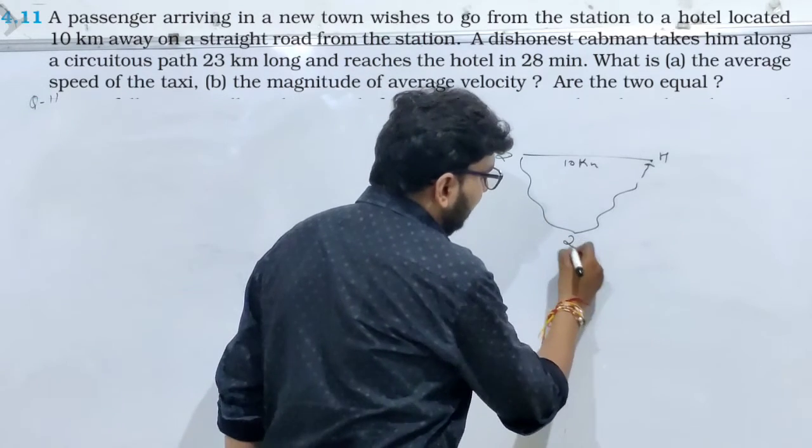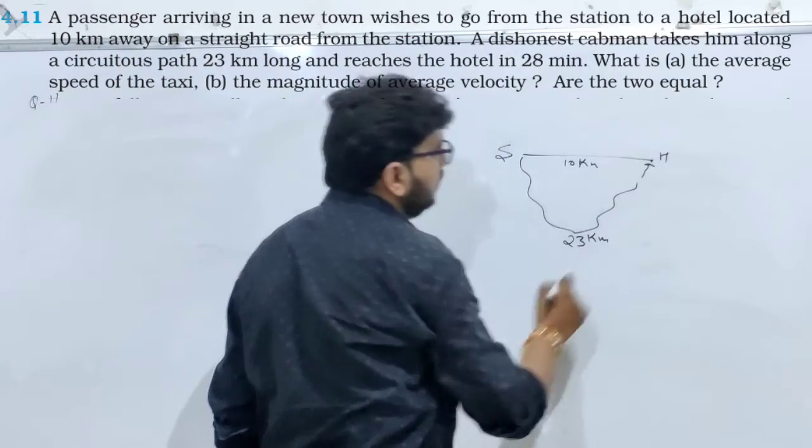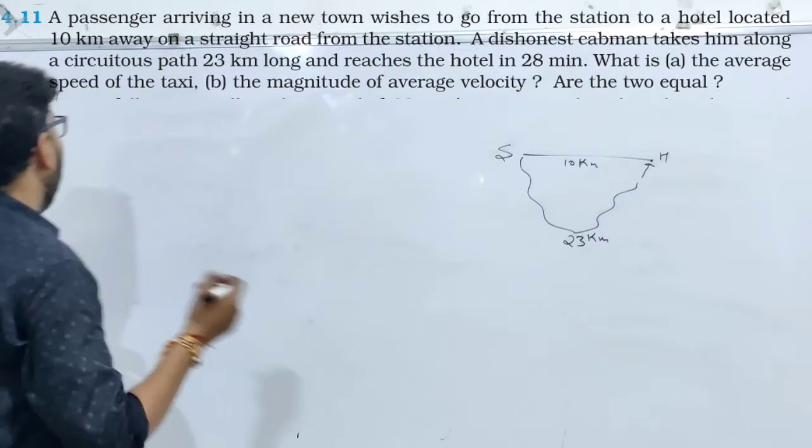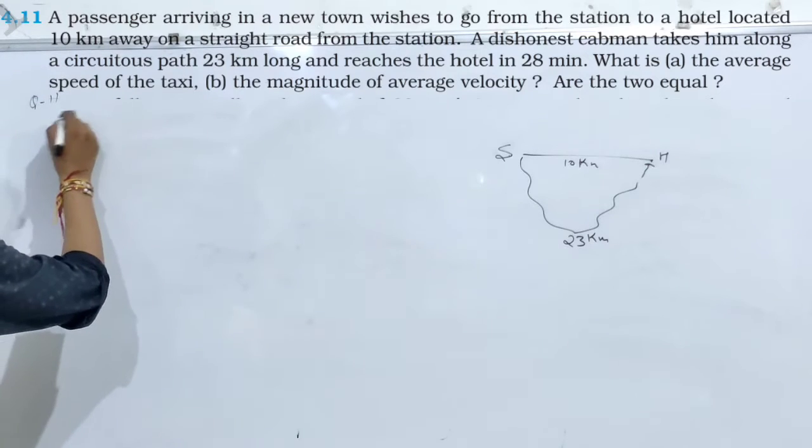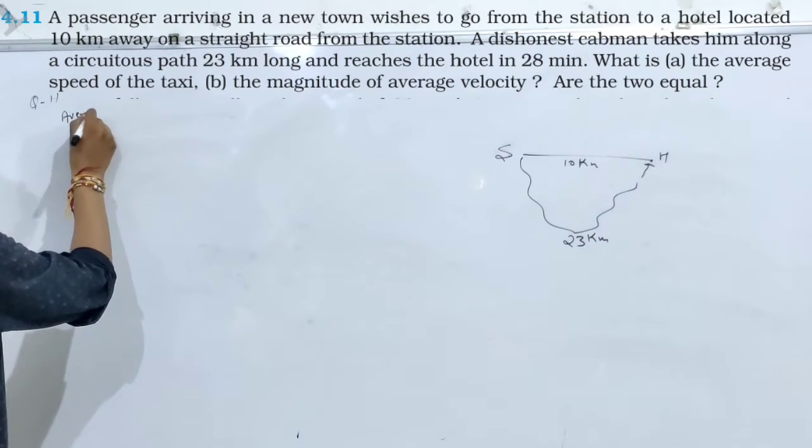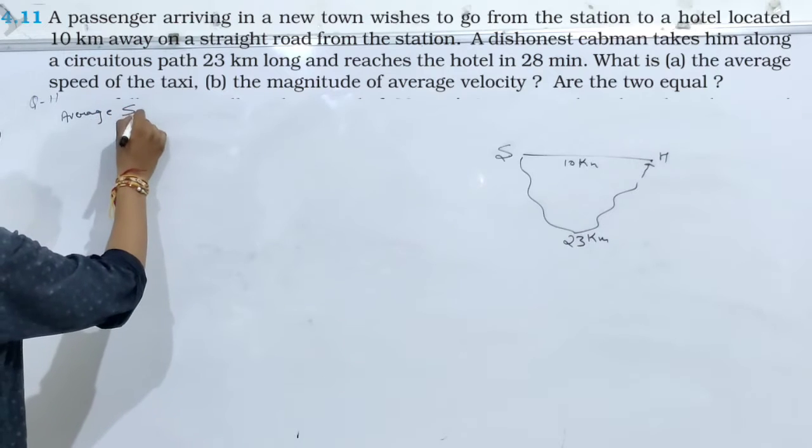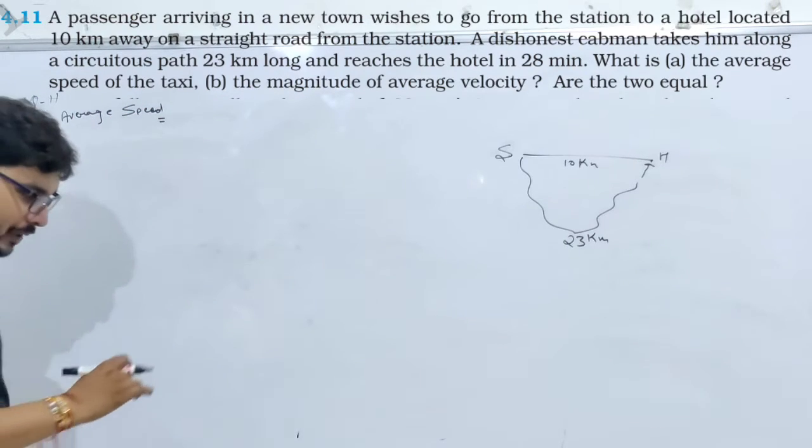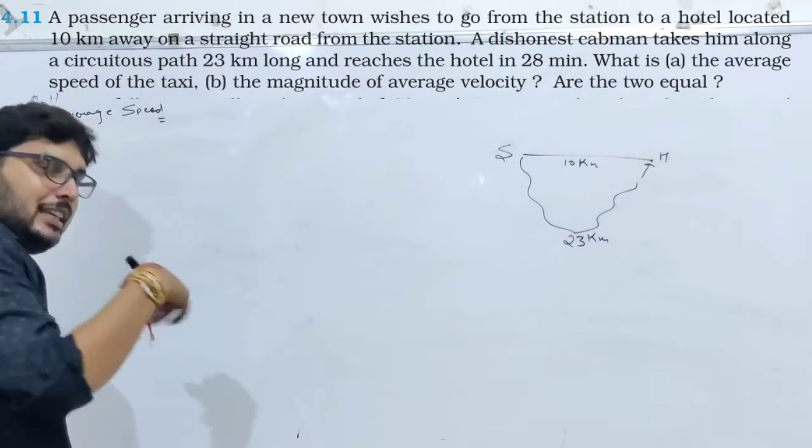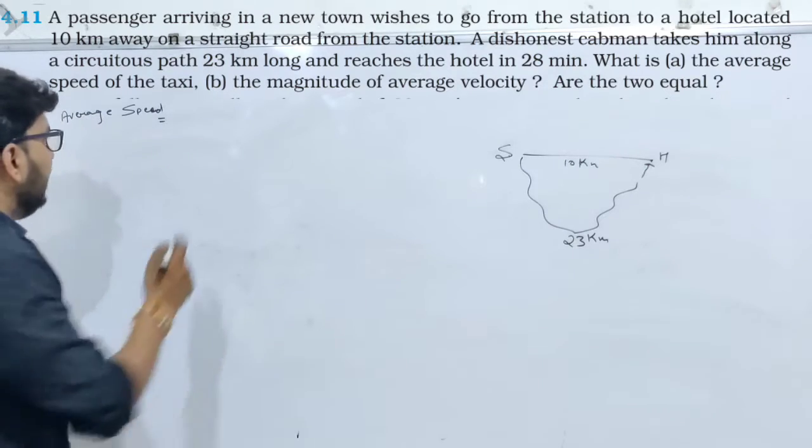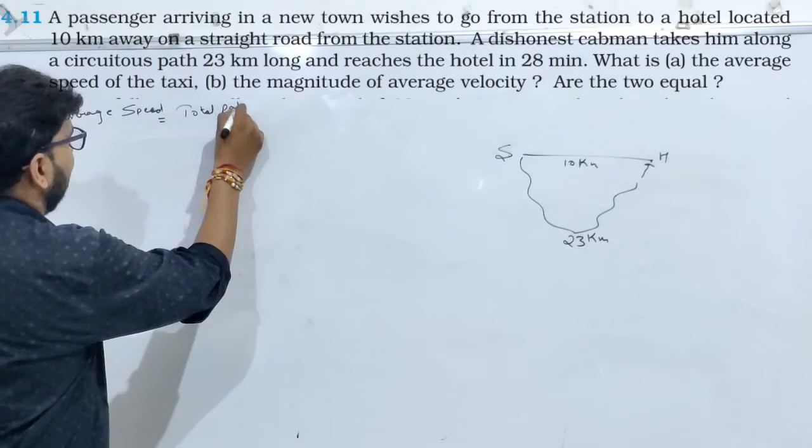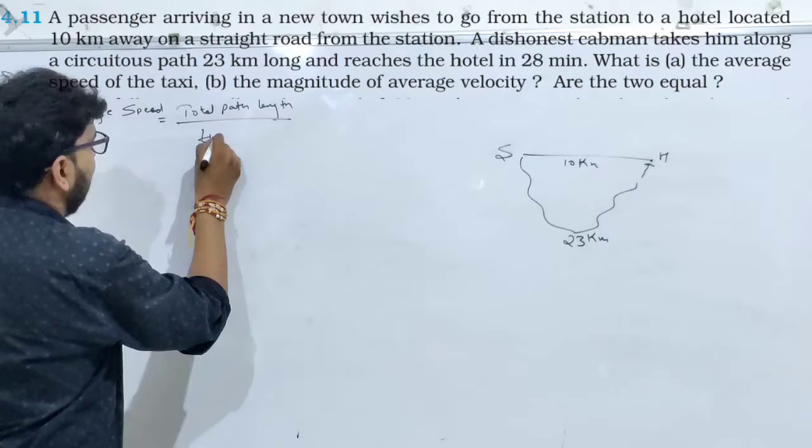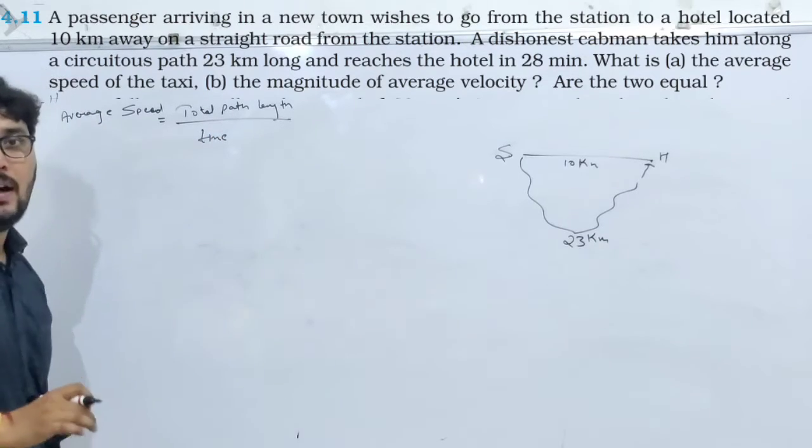तो ये जो distance इनको पड़ा, that was 23 kilometers. आपको velocity और speed बताने हैं. तो सबसे पहले हम speed calculate करते हैं, so average speed. Average speed will be equal to, speed क्या होते हैं, total path length divided by time.